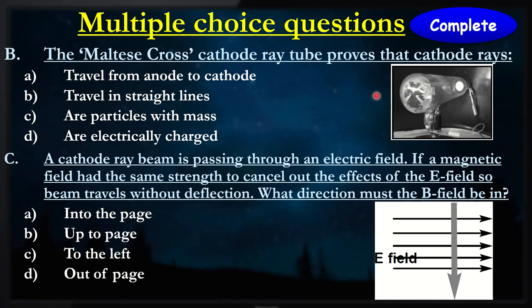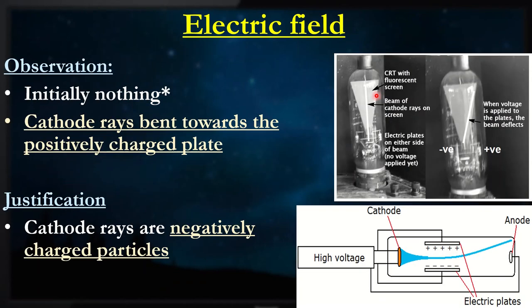What does the Maltese cross prove, and in which direction does the beam move? If you want to go through these questions, by all means, pause it first. Give yourselves a couple of seconds before you go on. I'm going to go through the answers now. Question B, the answer is B, travel in straight lines. And question C, out of the page is where the cathode beam goes.